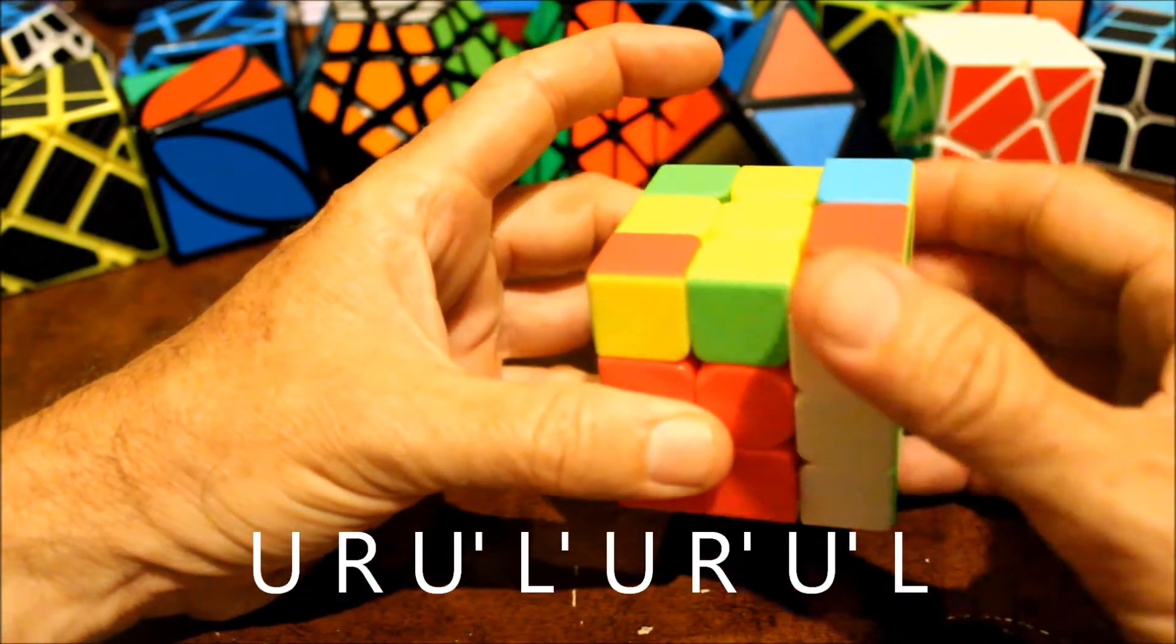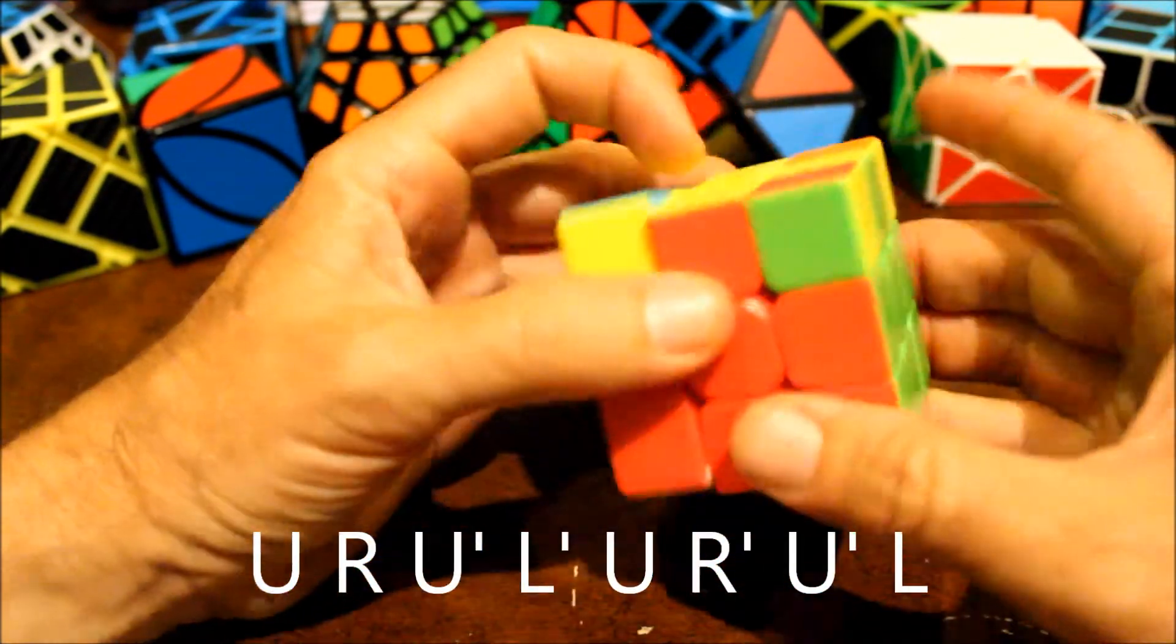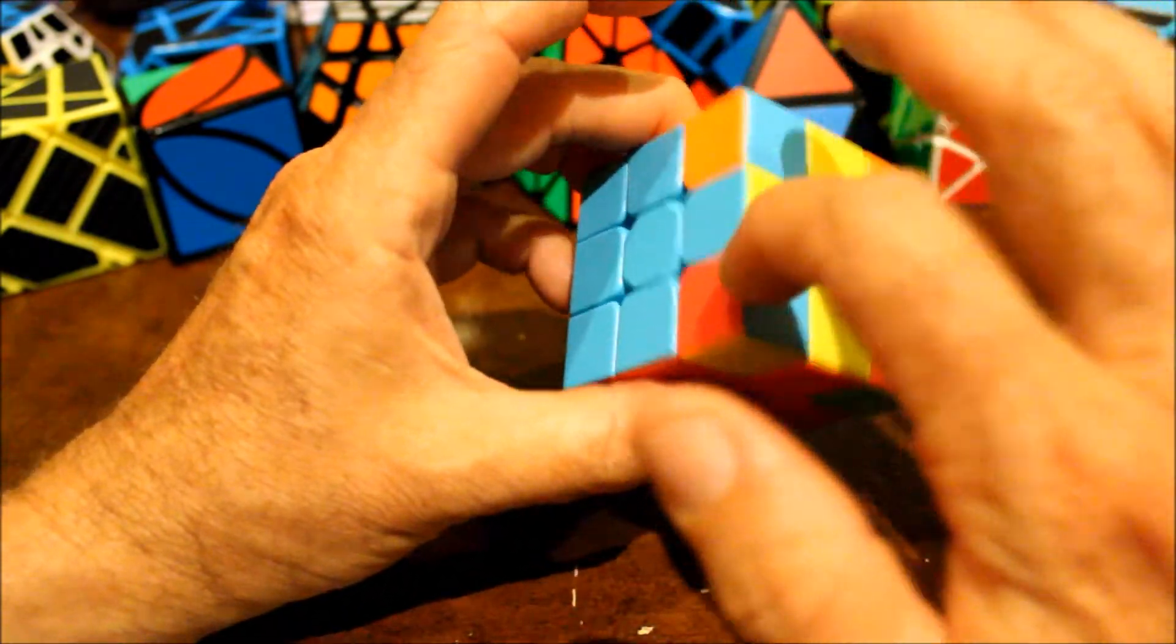So yeah, let's do it again. Upper, right, upper prime, left prime, up, right prime, upper prime, left. And now they should all be right. Correct, correct, correct, correct.